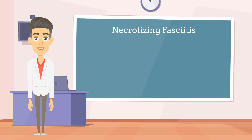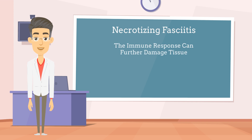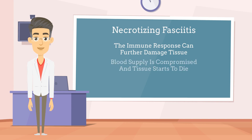The immune system recognizes the bacterial invasion and initiates an inflammatory response to try and fight off the infection. However, in necrotizing fasciitis, the immune response often becomes overwhelmed, or the response to the infection is so strong that the immune system starts to attack the tissues it is trying to protect. As the infection progresses, the bacteria spreads rapidly within the tissue surrounding the muscles and blood vessels, leading to further tissue destruction. The infected tissues start to die as they lose their blood supply and may develop a characteristic foul odor.